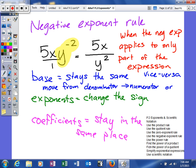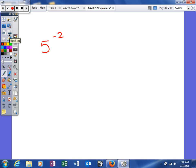So looking at another example, we have 5 to the negative 2 power. The denominator is 1. So we would take our base, and we'll move it down to the denominator. The base stays the same, but we change the sign of the exponent.